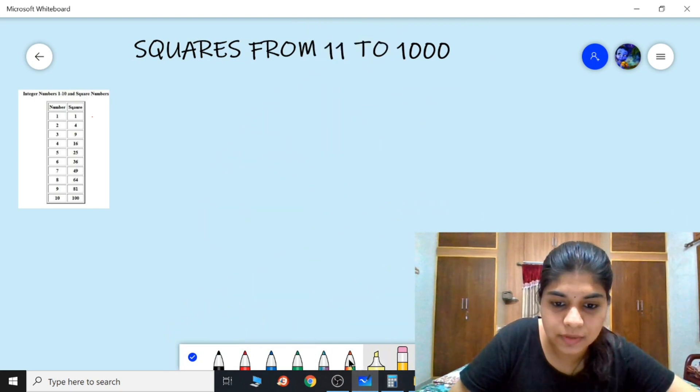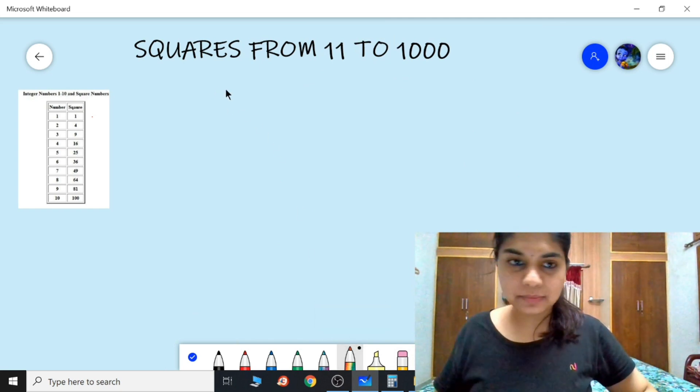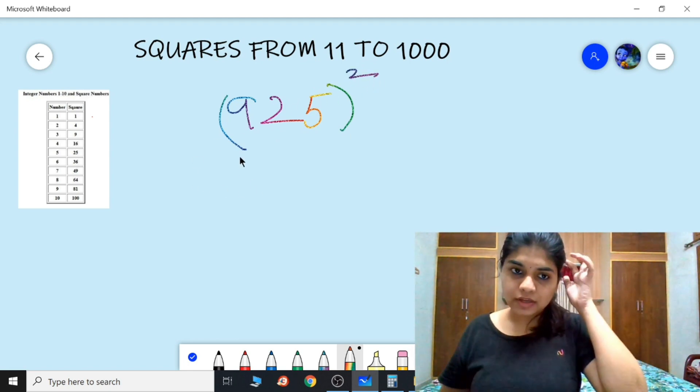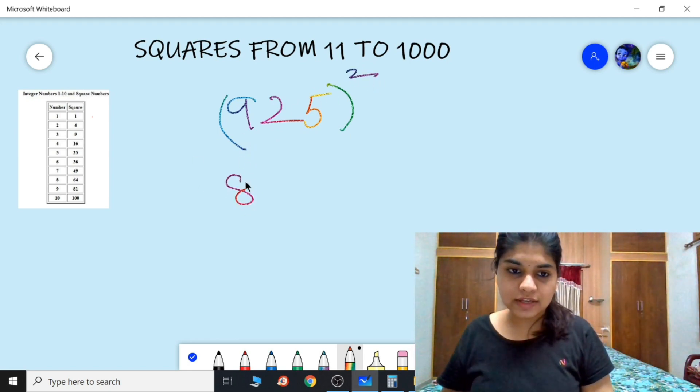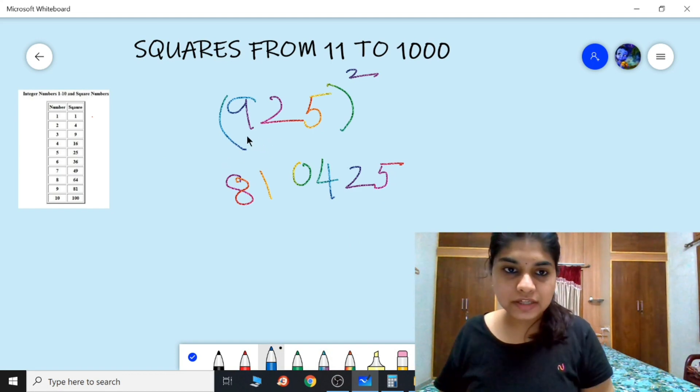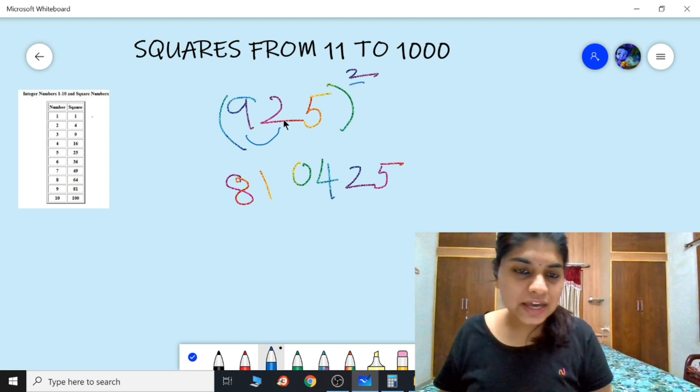Let's take another simple example so that there aren't any doubts. One last example, I'm taking 925 whole square. This is a larger number. So first, 9 square is 81, 2 square is 04, 5 square is 25.